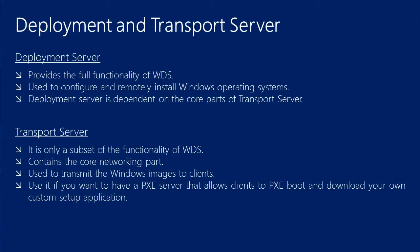Now let's talk about the two role services of WDS. The first one is Deployment Server and the second one is Transport Server. Deployment Server provides the full functionality and feature set of WDS. It is used to configure and remotely install Windows operating systems. Deployment Server is actually dependent on the core parts of Transport Server, which means Transport Server is needed for the Deployment Server to run.